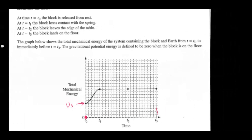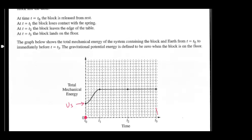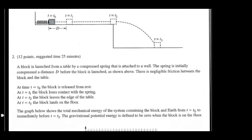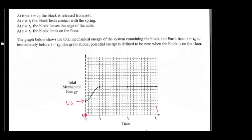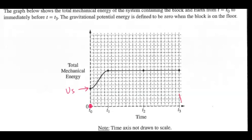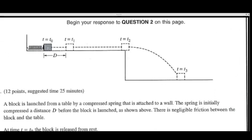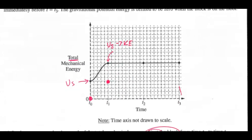Now let's look at t1. t1 is where the block loses contact with the spring. So when it loses contact with the spring, the block is going to have kinetic energy because that spring potential energy gets converted to kinetic energy. And so we can safely assume that at t1 it's going to be somewhere around here. That little point represents that spring potential energy going to kinetic energy — except this one is the total mechanical energy. We can see that it is on the table, so not only does it have kinetic energy, it also has gravitational potential energy.